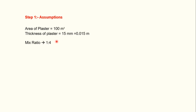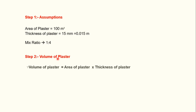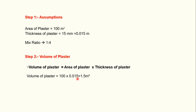Since we know the area and thickness of plaster, we can calculate the volume of plaster. Volume of plaster equals area of plaster multiplied by thickness of plaster. Substituting these values: 100 multiplied by 0.015, which equals 1.5 cubic meters.